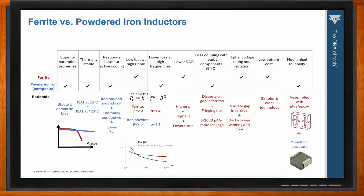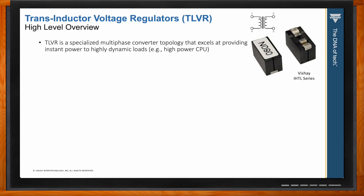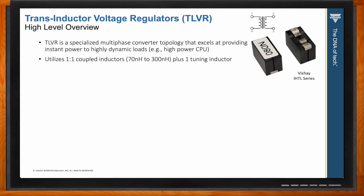Powdered iron is superior for mechanical reliability because of its monolithic structure, as opposed to the two-piece glued ferrite construction. Now let's talk about trans-inductor voltage regulators, or TLVRs. TLVR is an up-and-coming architecture with a solid foothold in high-power computing — AI engines and servers. These regulators use coupled inductors, typically in the range of 70 to 300 nanohenries, functioning as a 1:1 transformer — which is where the term 'trans-inductor' comes from.